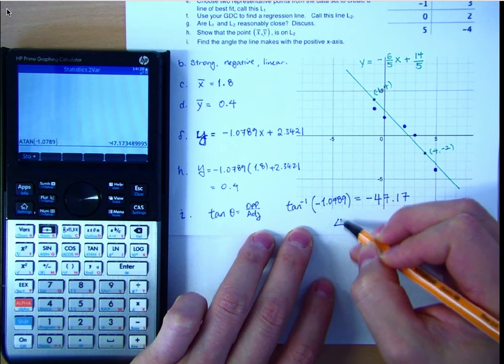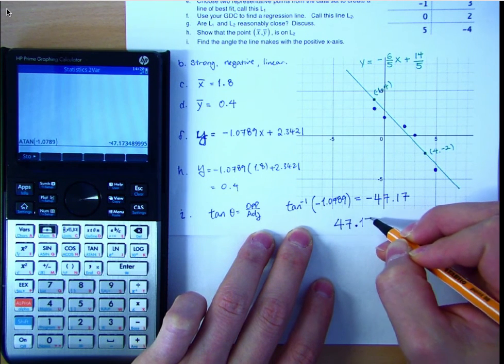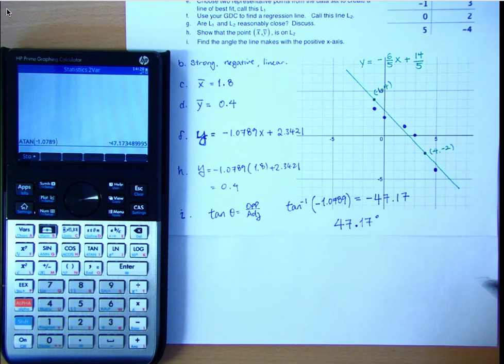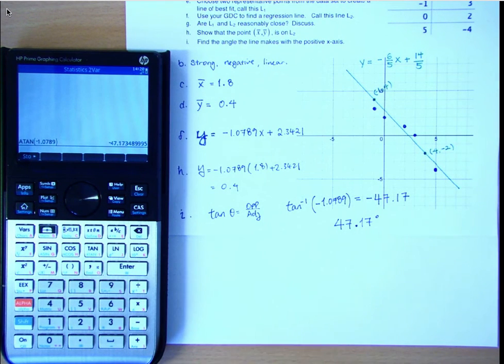So, the angle between is 47.17 degrees. And if we wanted to get that directly, we could have also taken the positive. And I think it would have worked, right?